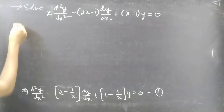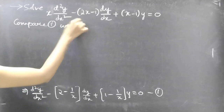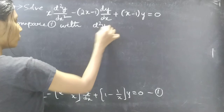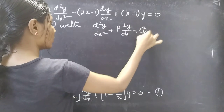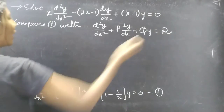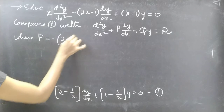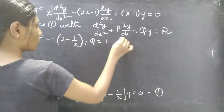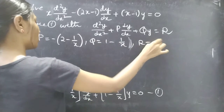Now compare equation 1 with the standard form d²y/dx² + P dy/dx + Qy = R. We get: P = −(2 − 1/x), Q = 1 − 1/x, and R = 0.